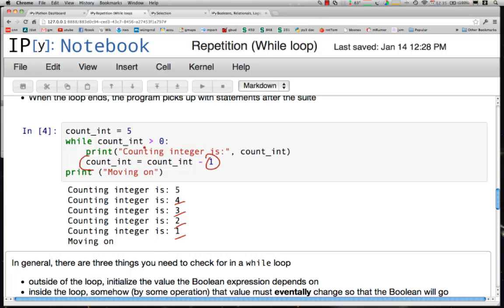At the end, count becomes 0. 0 is not greater than 0. The loop ends and we are moving on.